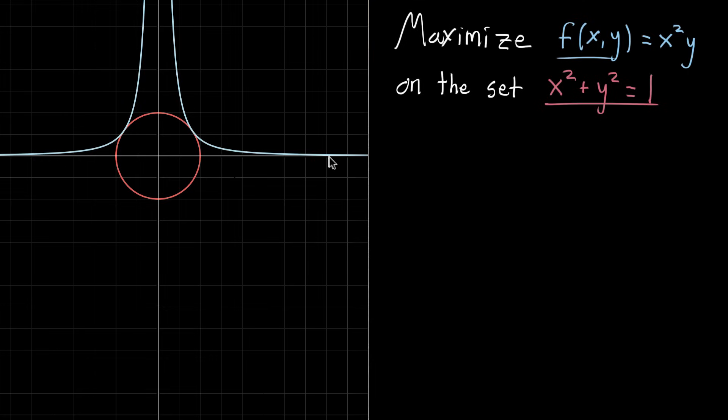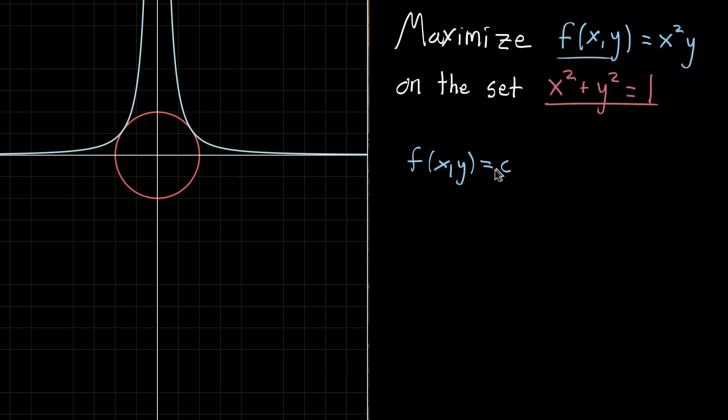And then this curvy line here is one of the contours of f, meaning we're setting f of xy equal to some constant, and then I was varying around that constant c.